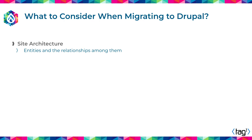In order to understand some of this, I want to put it in the context of a real-life project. Without disclosing names, this is a newspaper in Germany. We're going to talk about content architecture — entities and relations among entities.